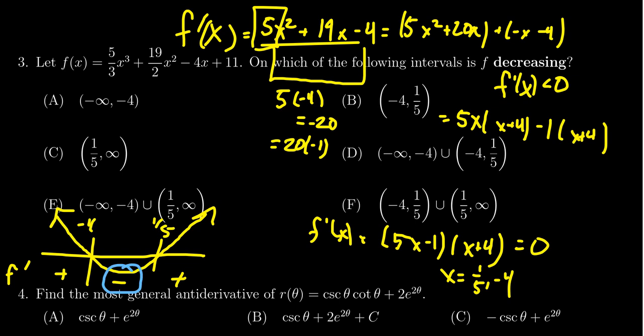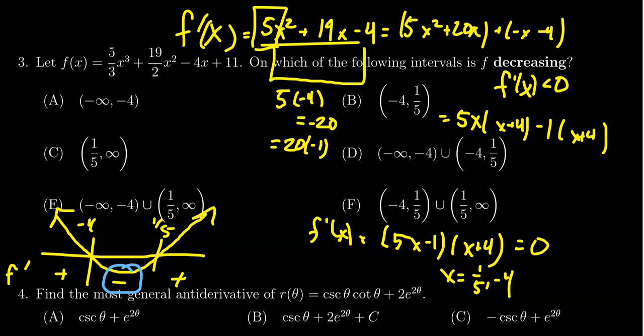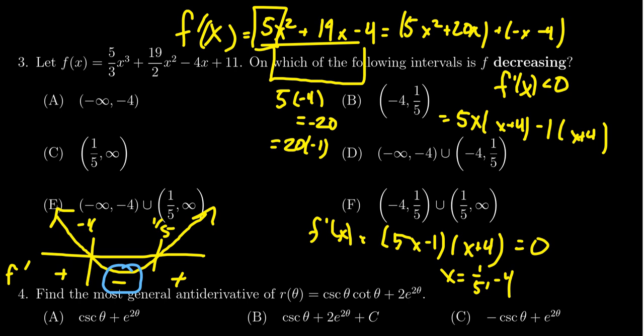Where is the first derivative negative? That'll be between -4 and 1/5. That'll be exactly where the function's decreasing. So we see that the correct answer is B, the interval from -4 to 1/5.